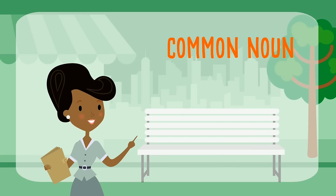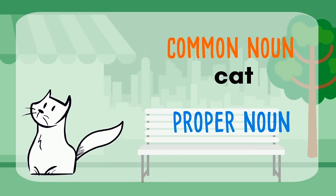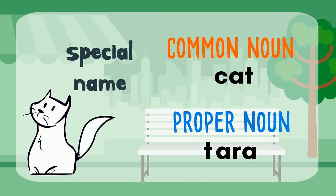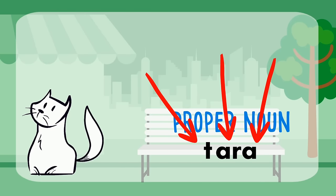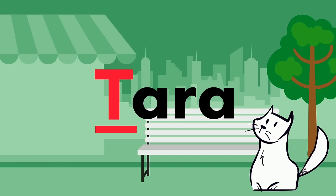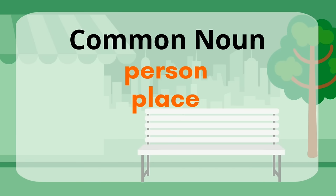Let's come up with an animal common noun. Do you have a pet? What kind of animal is it? Let's say a cat. Now we need a proper noun for the cat — the special name given to this cat is Tara. Don't forget to capitalize the first letter T, because Tara is a proper noun. Tara is a proper noun because it's a special name given to the cat.